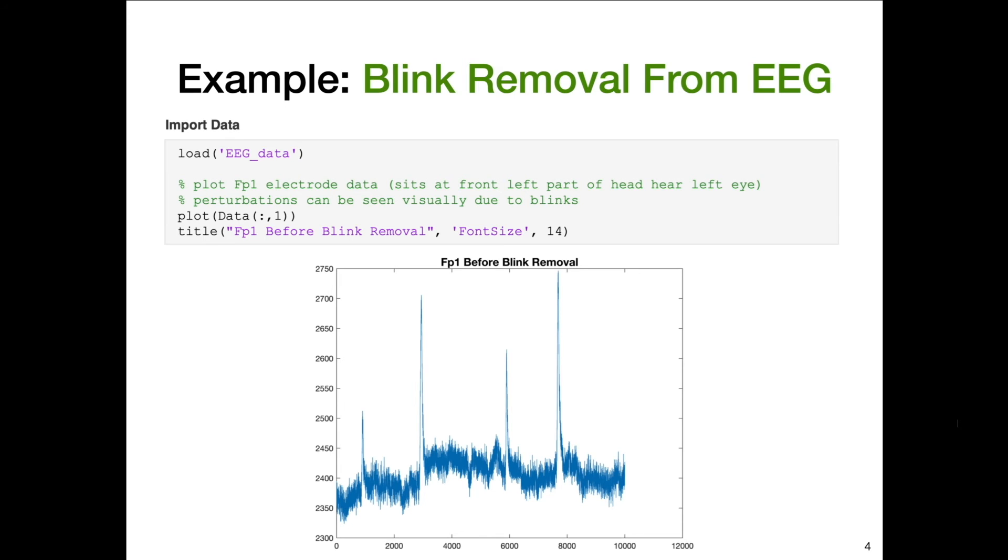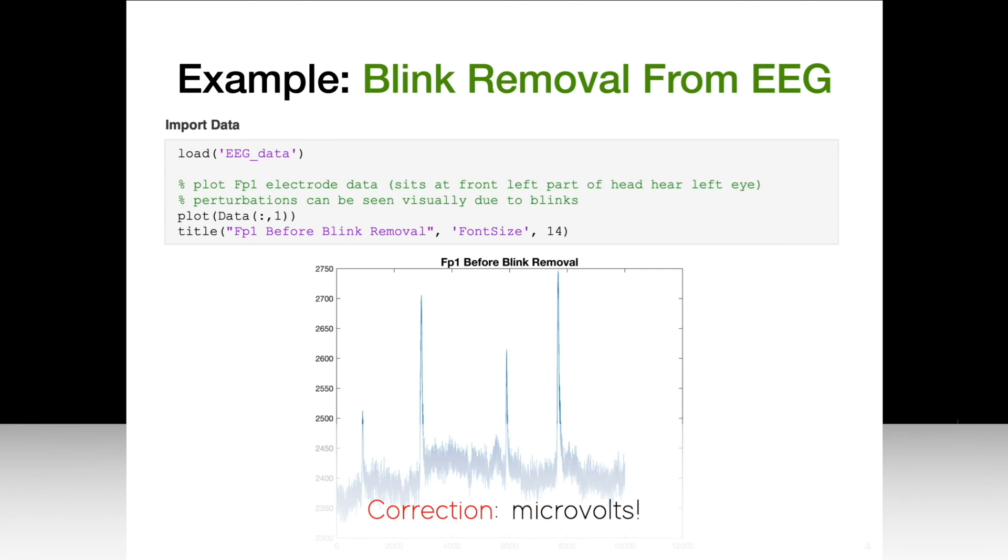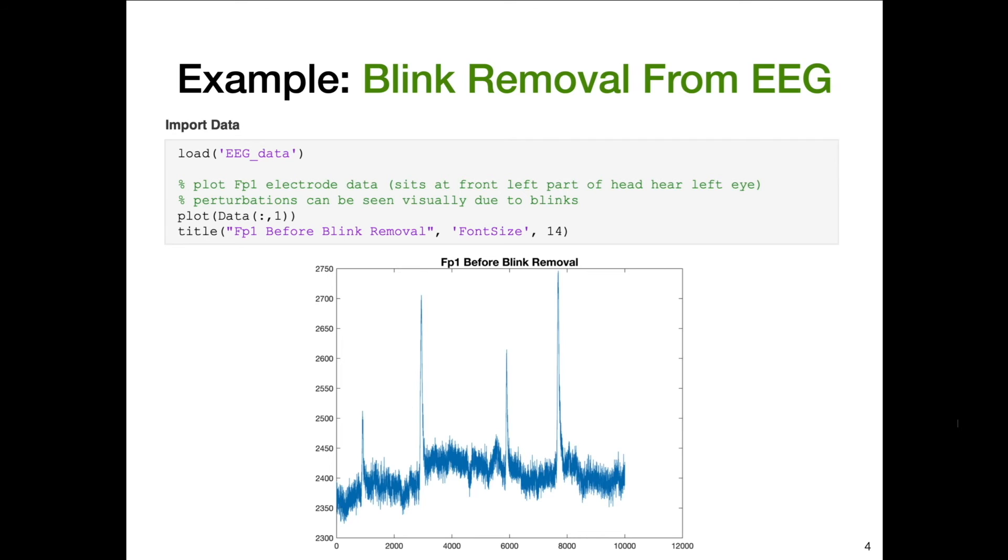Here we have a plot of the voltage versus time. The y-axis is voltage in millivolts, the x-axis is a time index, and this is for the FP1 electrode, which sits near the front of the head on the left side, on your left forehead. This electrode is particularly prone to blink artifacts because it's one of the closest electrodes to your eye. You can actually see the blinks occurring because you'll have these giant spikes in the signal. We're trying to get rid of that because with EEG, we're trying to measure brain activity, not blink activity.